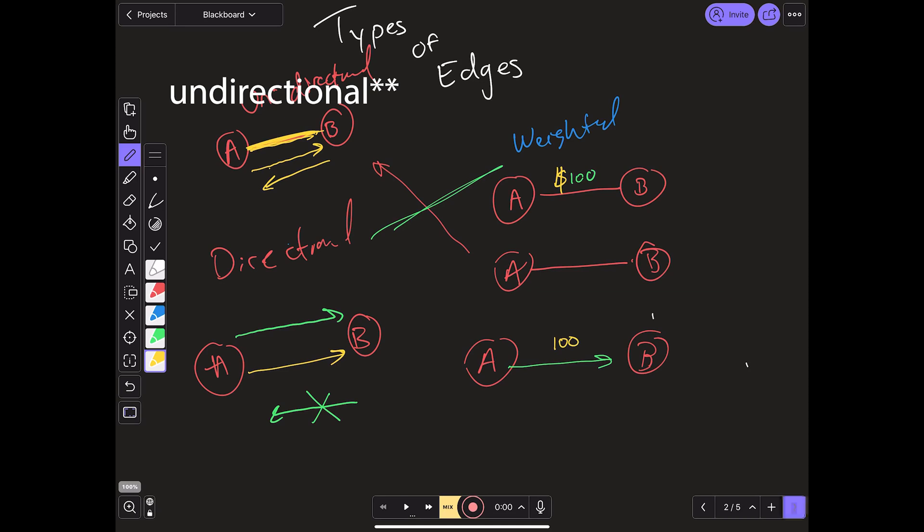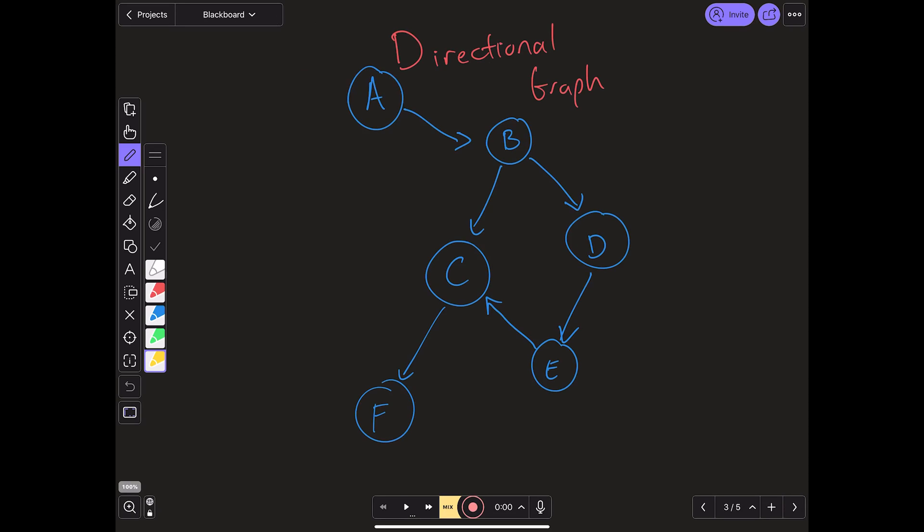So here's another example of a directional graph. There are a couple of things to note here and these are the types of graphs you'll more commonly see in actual graphing algorithms and graphing problems when you're coding. So let's analyze this graph. We see here that A can go to B, B can go to D and E, D can go to E, E can go to C, and finally C can go to F and F can't lead anywhere.